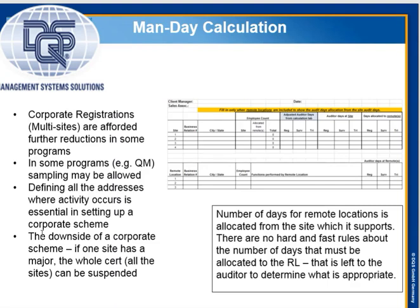Our mandate calculator will calculate the total amount of days required for a site, which may be supported by remote locations. The mandate calculator does not separate the amount of days from the result number that are going to be given to the site versus the remote location — there is no hard and fast rule for that. The lead auditor is the one who makes that determination. In the initial setup, it's generally done by sales and confirmed by a lead auditor.